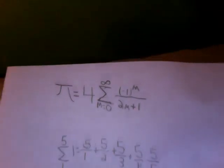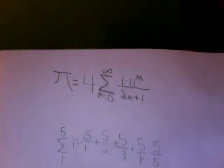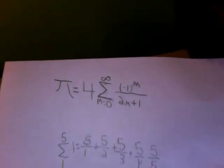Pi equals 4, summation from m equals 0 to infinity, negative 1 to the m power over 2m plus 1.